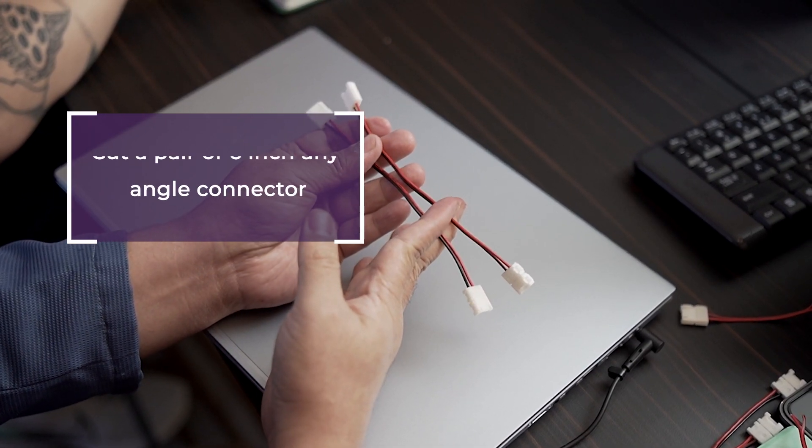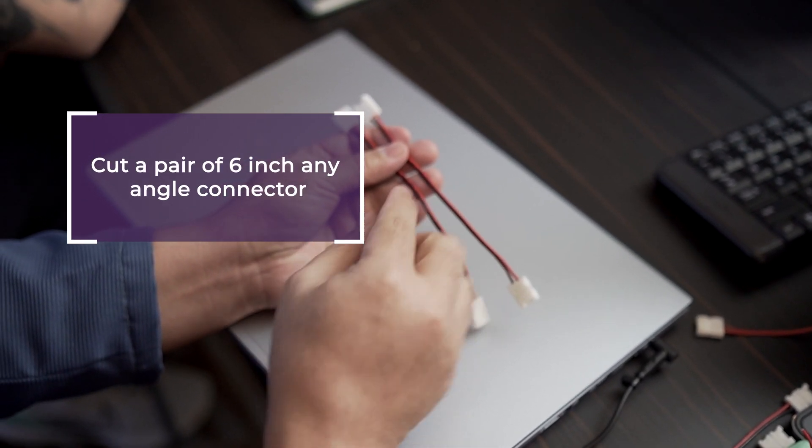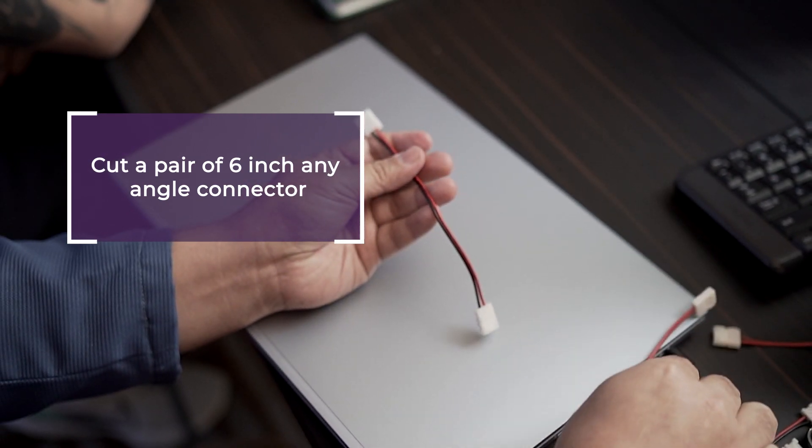We have installers or customers who normally ask about T-connectors, and basically right now we don't have that in our product listing. But what I found out is that we can actually utilize our six-inch angle connectors and create a T-connector out of it. The way to do it is, you have one full six-inch angle connector here, and then you just have to do a pigtail connection for one pair of it.